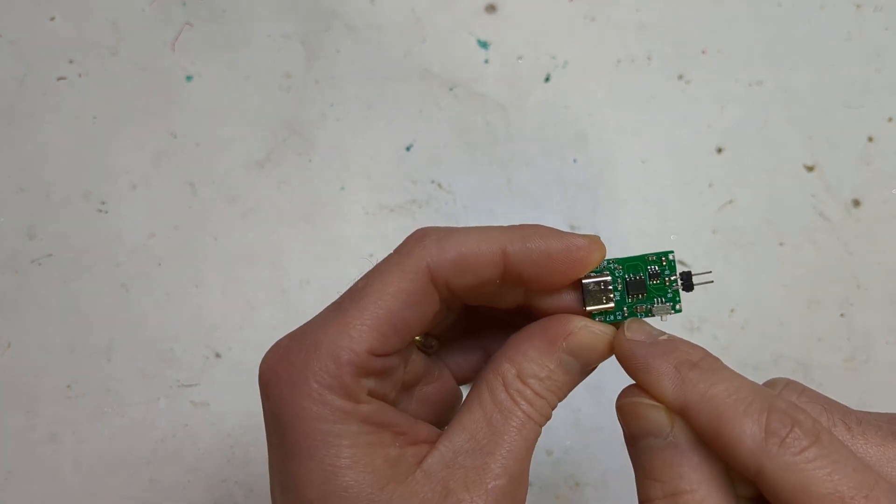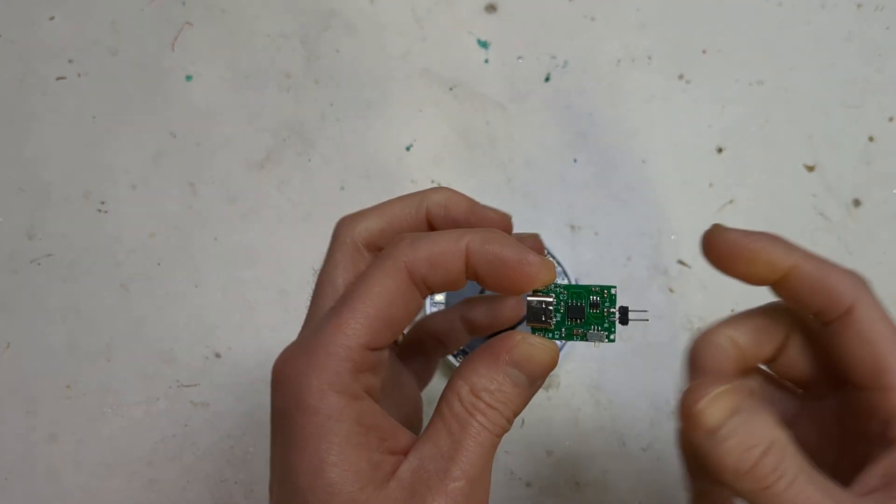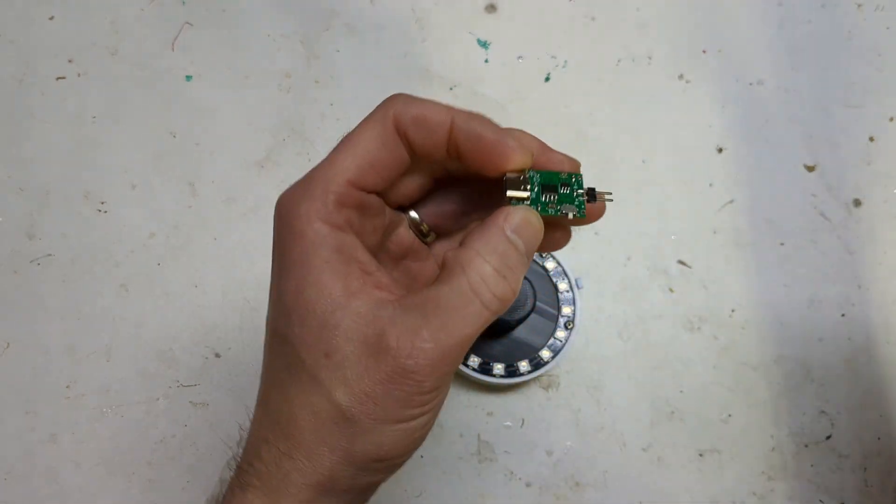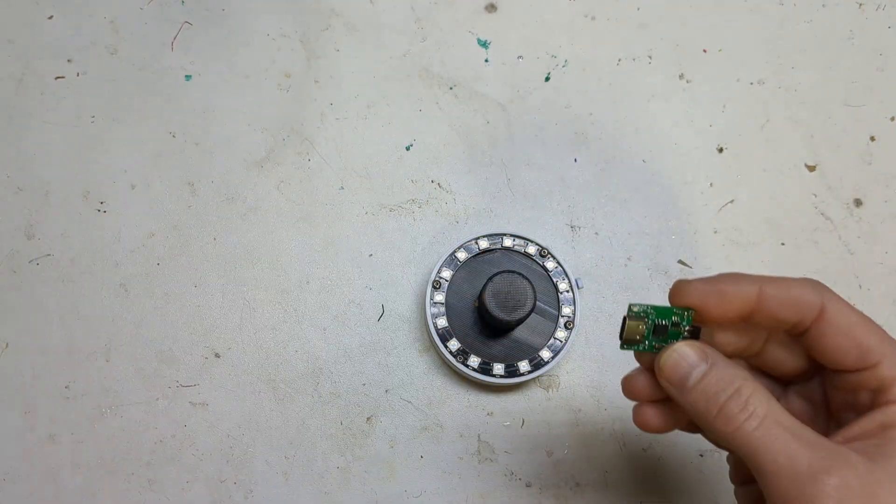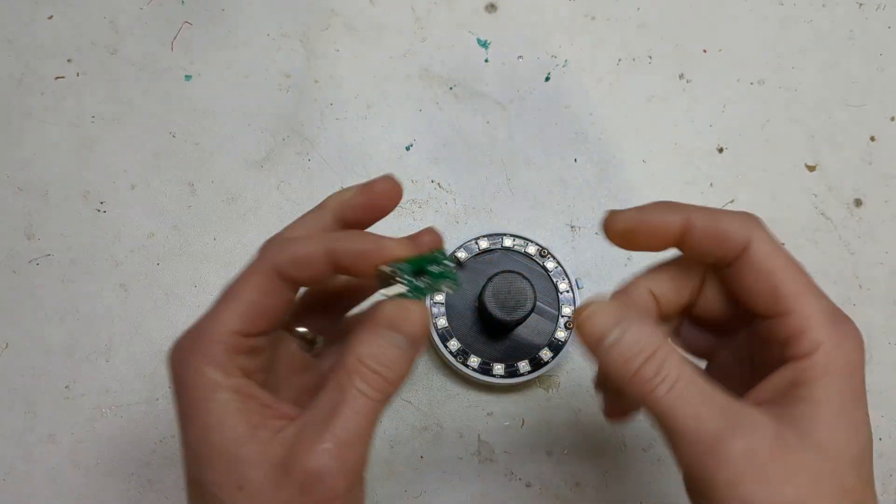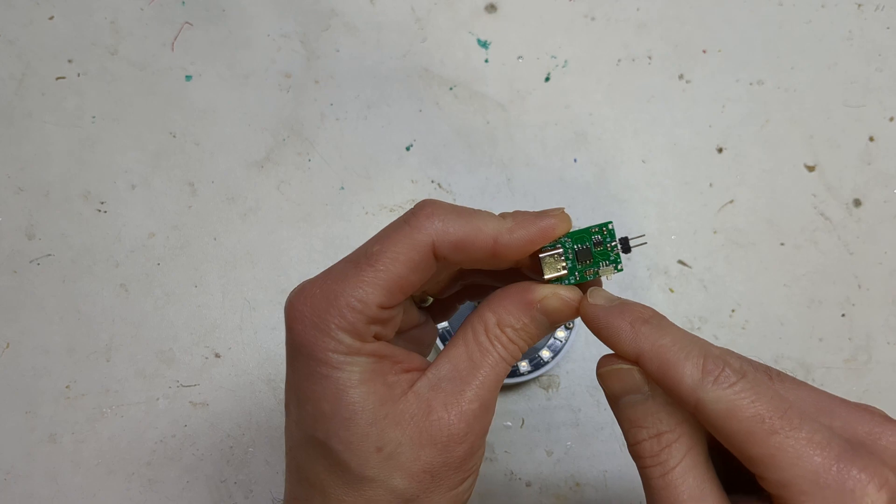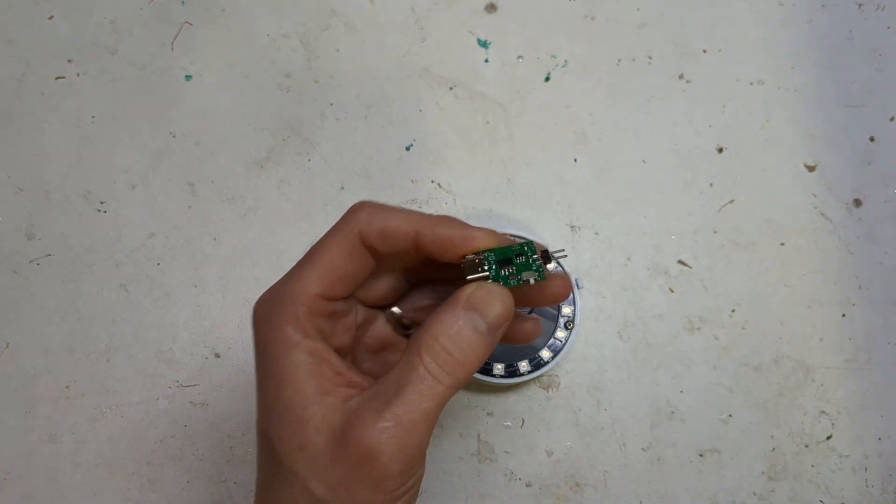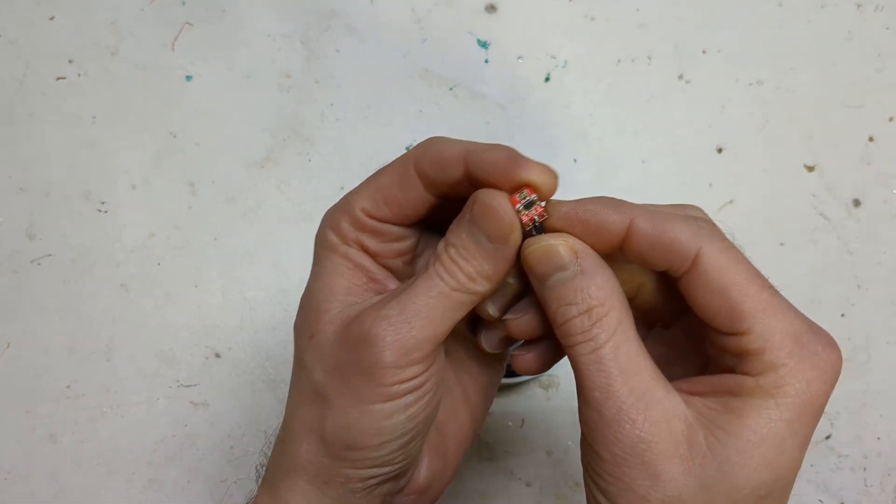And then it's got resistors on it so it can change how quickly it charges. Because I think if you get a normal one, like an off-the-shelf one like this, it'll chuck like an amp through your lipo, which is not great. You can sort of, but there is a settable resistor.